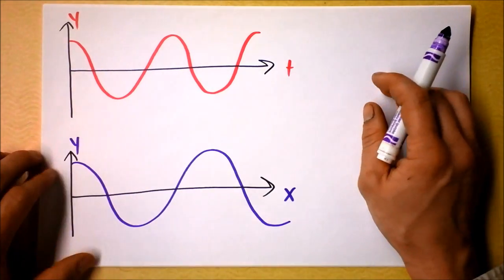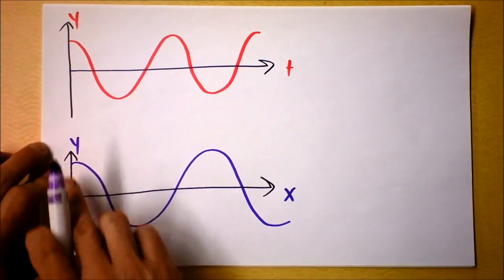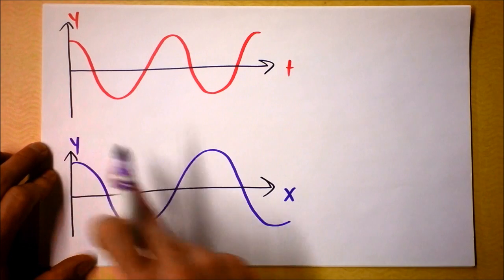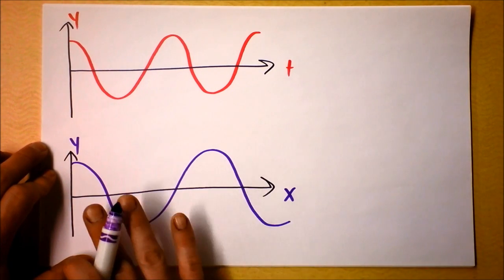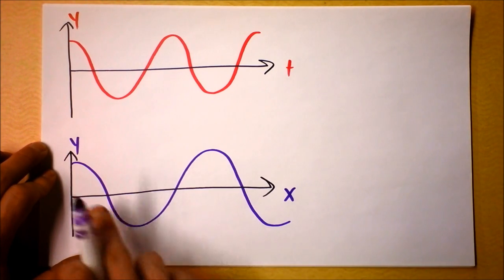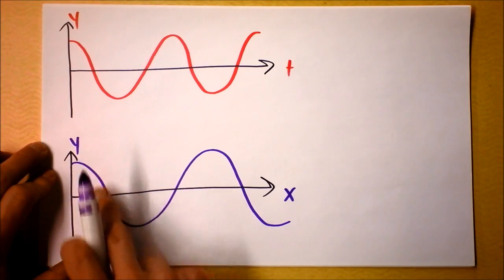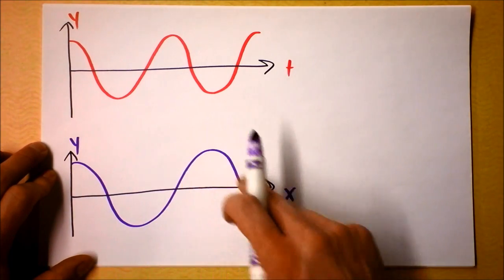I could also represent it like this. This would be like a photograph because it's a graph of y versus x. So I'm taking a particular instant in time and seeing that some points of the rope are up and other points of the rope are down.